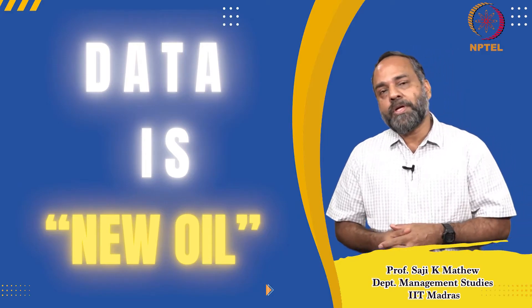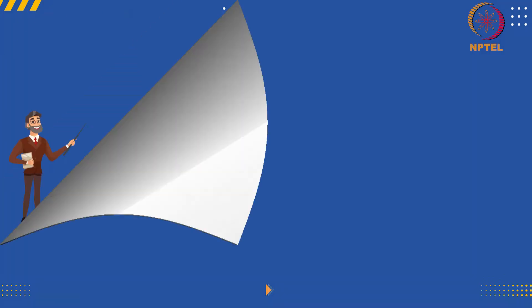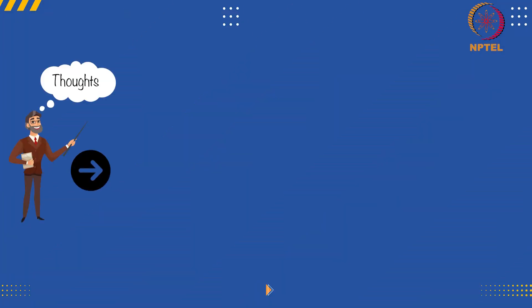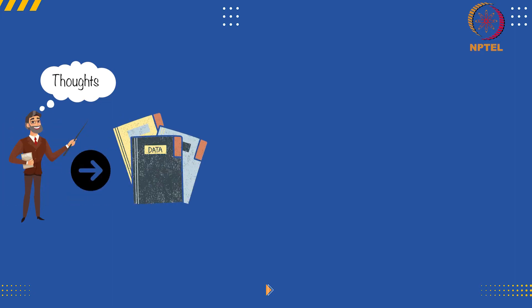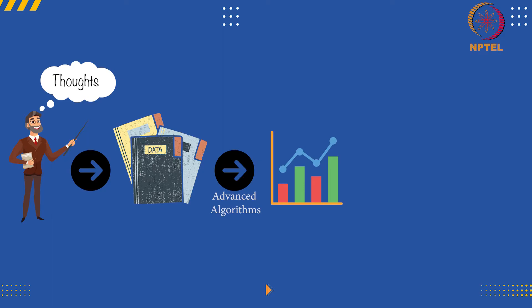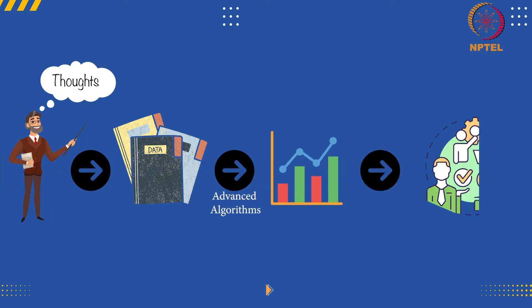For example, what does Twitter do? Twitter converts thoughts into data. This data gets converted to insights through advanced algorithms or text mining algorithms. And those insights are useful for businesses to take their decisions. Therefore, data is the starting point.